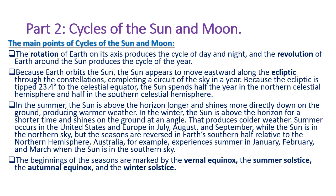Summer occurs in the United States and Europe in July, August, and September while the sun is in the northern sky, but the seasons are reversed in Earth's southern half relative to the northern hemisphere. Australia, for example, experiences summer in January, February, and March when the sun is in the southern sky. The beginning of the seasons is marked by the vernal equinox, the summer solstice, the autumnal equinox, and the winter solstice.